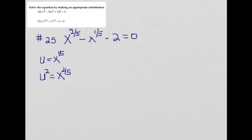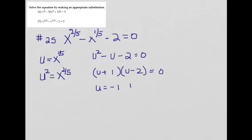Then we have a quadratic equation again: u squared minus u minus 2 equals 0. This factors—we want the 2 to be negative and the 1 to be positive—so we get u equals negative 1 or u equals 2.